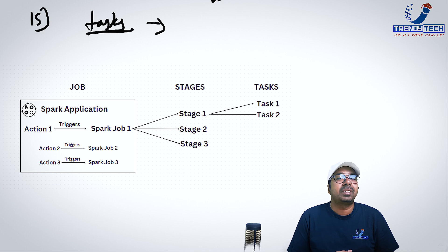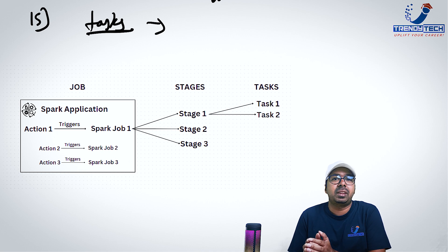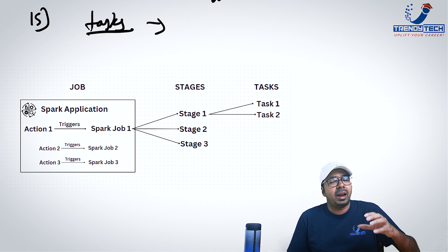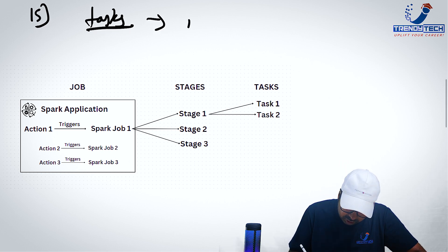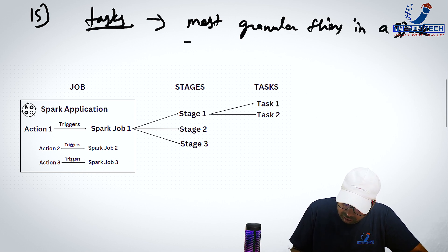Next in our list is what is a task? Task is the most granular unit in a spark job. First we have a job, then stages and then tasks. Let's say in a data frame, there are eight partitions, then there will be eight tasks which are corresponding to that. So task is at the very granular level. And there will be multiple tasks, many of them would be running in parallel also. So most granular thing in a spark job.